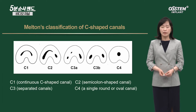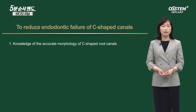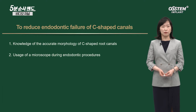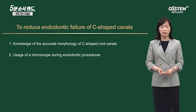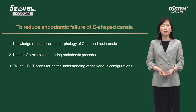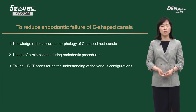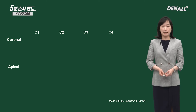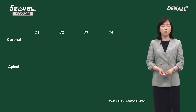You need to understand the form and category first. In general, I use a microscope. When I go into the orifice, I try to understand the shape accurately. If it is vague even when I use the microscope, I use CBCT to understand the form of the root canal. In the previous study, I looked at CBCT before surgery to examine different shapes.